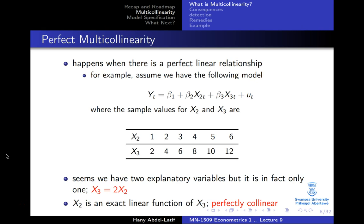Let's give an example. Assume this is the model where Y is the dependent variable and Y depends on X2 and X3. Looking at the sample for X2 and X3, you might think we have two variables explaining the variation in Y, but in fact there is only one — because if you multiply each value in X2 by 2 you obtain X3. So X3 equals 2X2, which is a typical case of an exact linear relationship. X2 is an exact linear function of X3, so they are perfectly collinear.